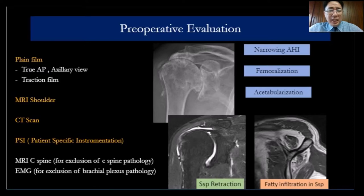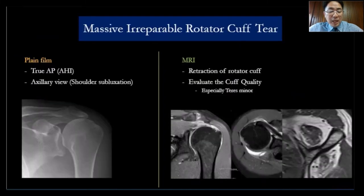If you have any doubt, check the cervical spine with MRI, or do an EMG. Do not miss things like massive cuff tear or irreparable cuff tear.